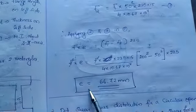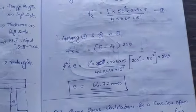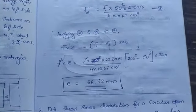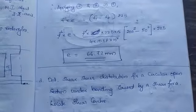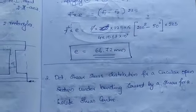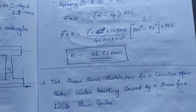F cancels and you'll get the value of e as 66.72mm. Now you have one more problem which is circular section. So try to solve this, I have sent the PDF and try to understand that the same concepts will be applying in that also.